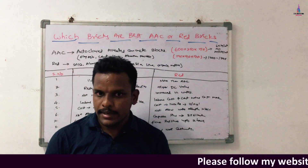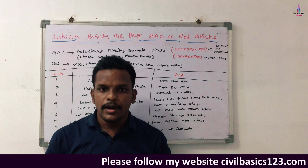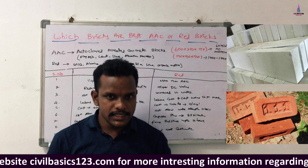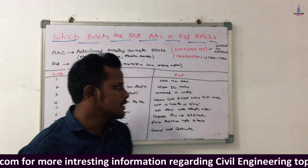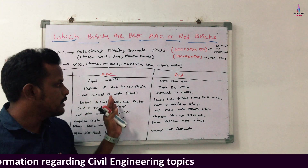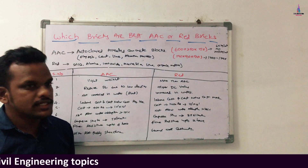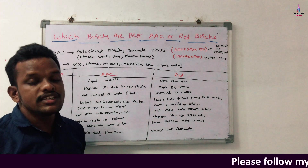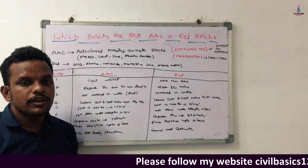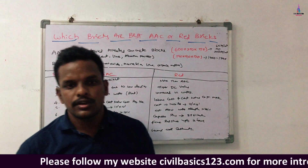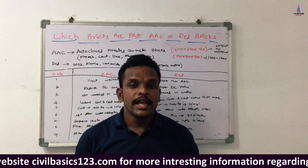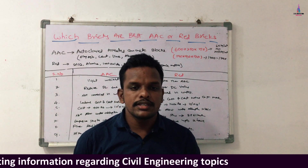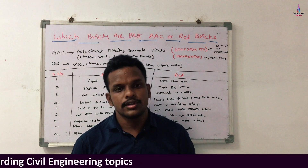This is the complete overview of the different types of blocks used in building wall construction and the differences between red brick blocks and AAC blocks. These are the nine key comparison points. Due to the lower density, red brick blocks will likely be eliminated from future construction in favor of AAC blocks. For any queries, please comment below. Complete details are also available on my blog at civilbasics123.com. Thank you.